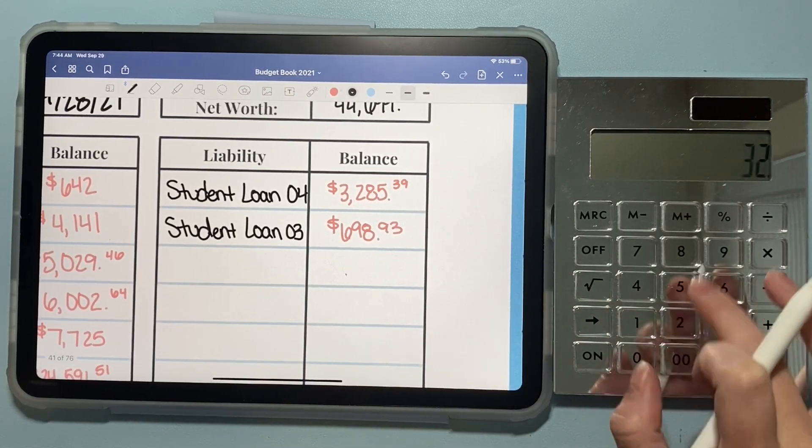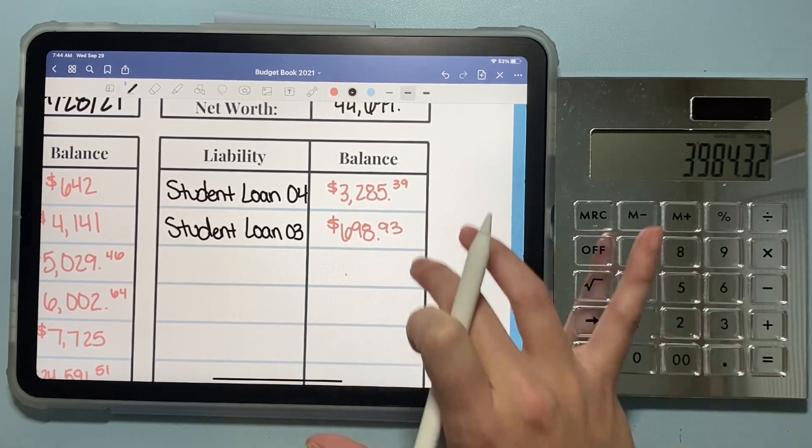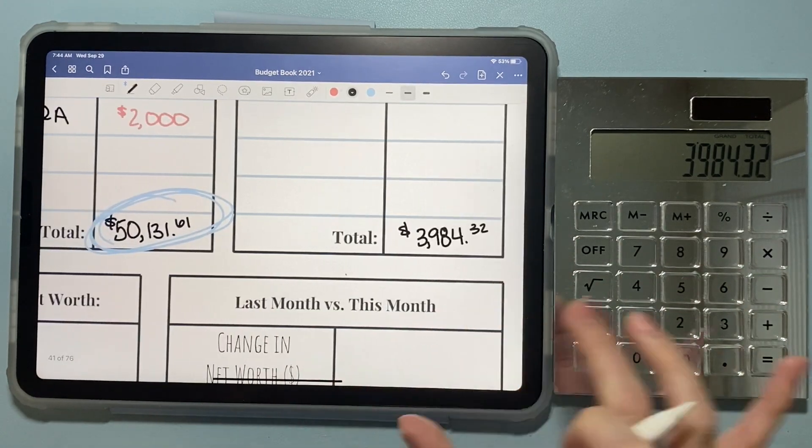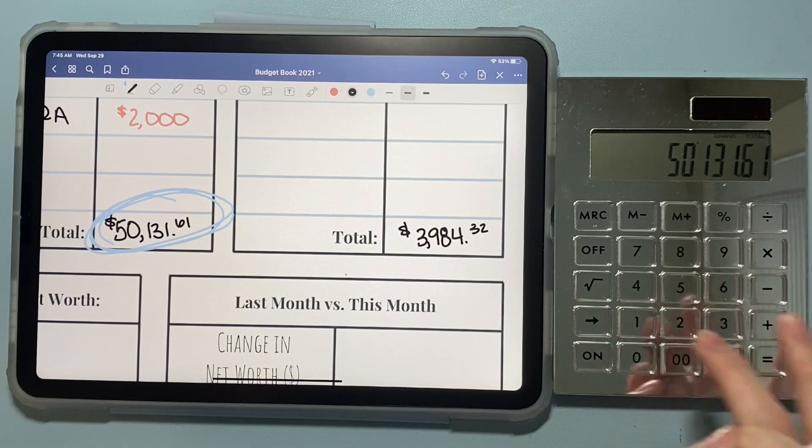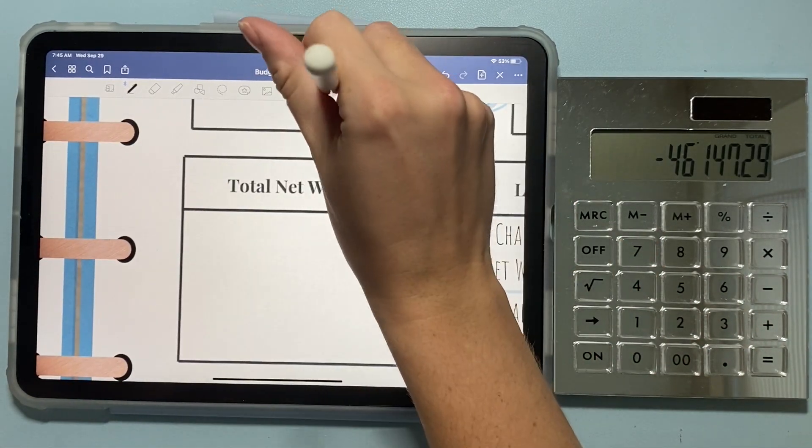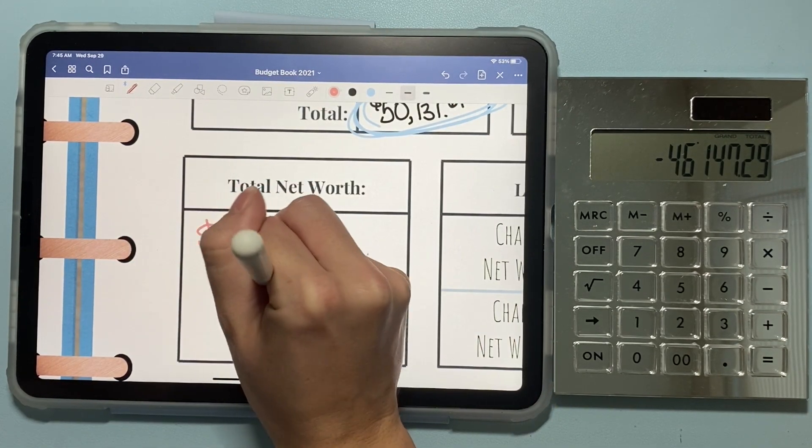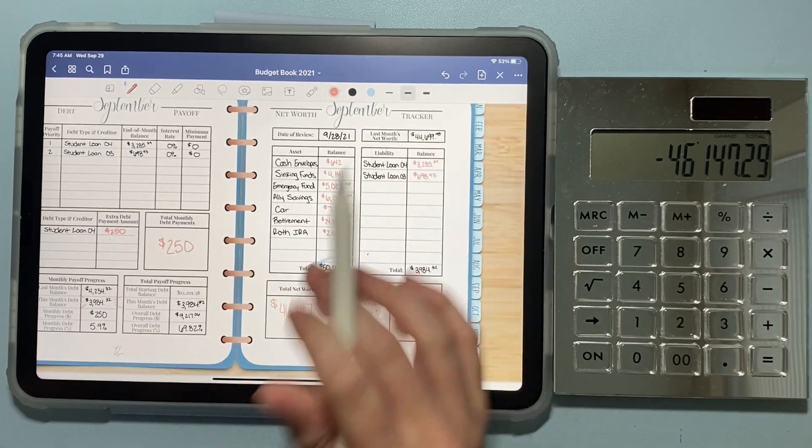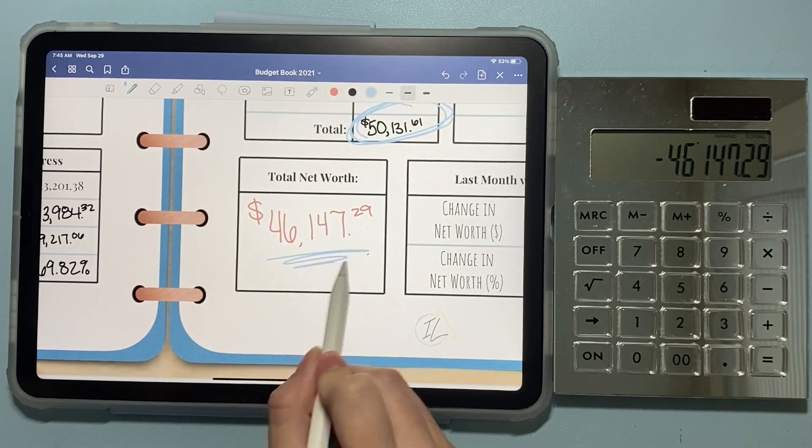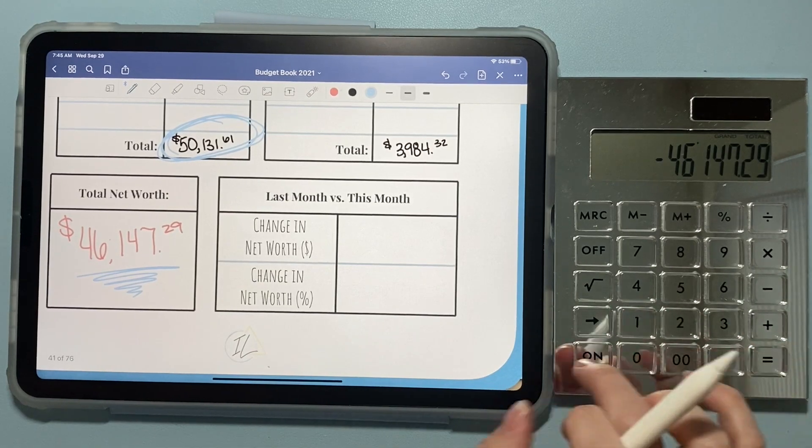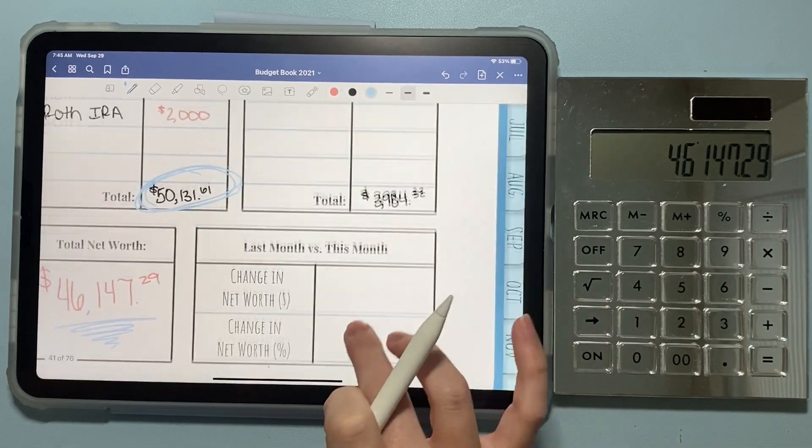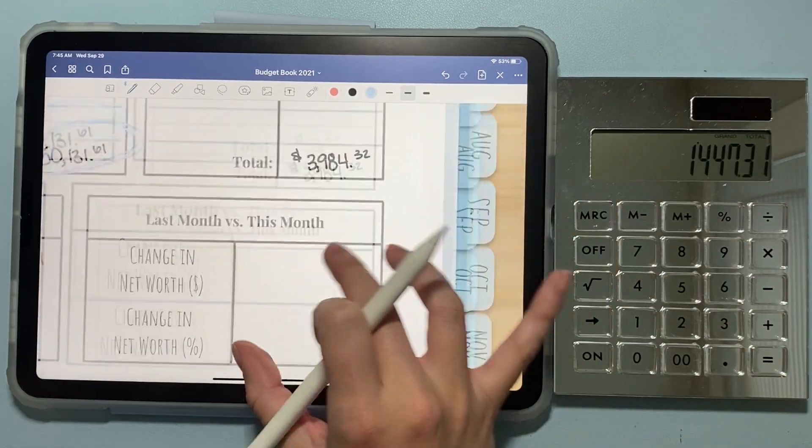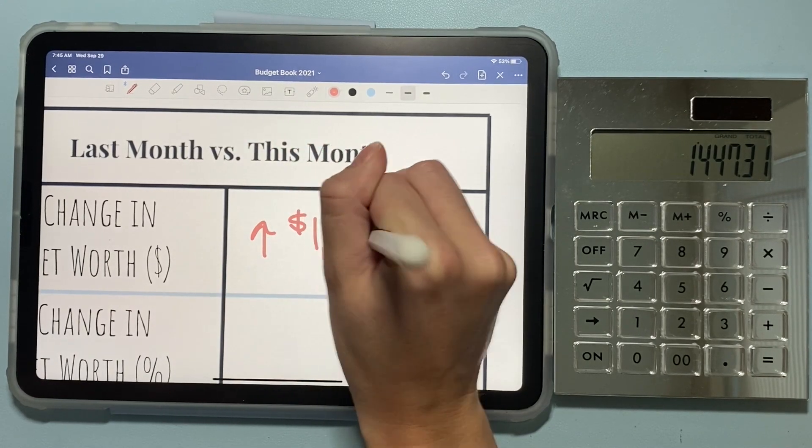And then my debts are just these two, which I will just add up again really quick. So that means our total debt is less than $4,000. So if we subtract that from the $50,131.61, we will get my total net worth, which is $46,147.29. And last month we were under $45,000. So that means we have officially met our $45,000 milestone mark as well, which is super exciting. So let's see what the difference from last month to this month in our net worth is. So last month we had $44,699.98. So that means this month we increased our net worth by $1,447.31.